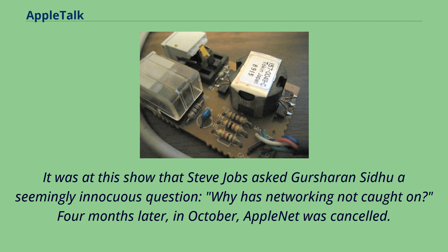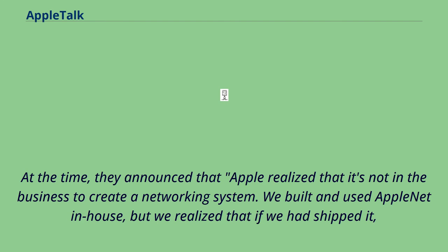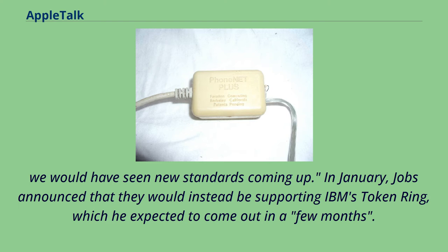At the time, they announced that Apple realized it's not in the business to create a networking system. They had built and used AppleNet in-house, but realized that if they had shipped it, they would have seen new standards coming up. In January, Jobs announced that they would instead be supporting IBM's Token Ring, which he expected to come out in a few months.